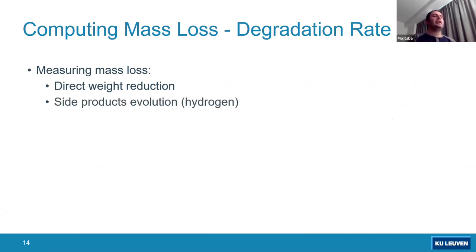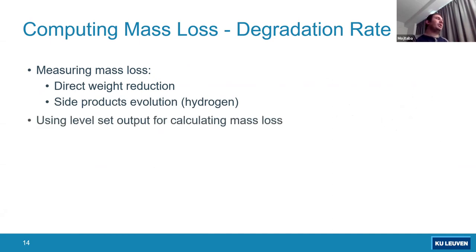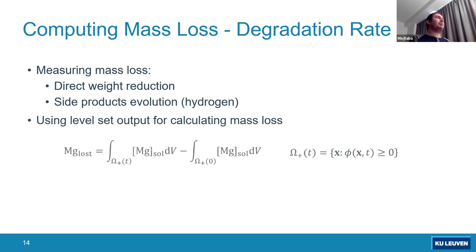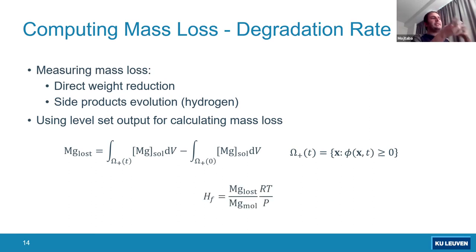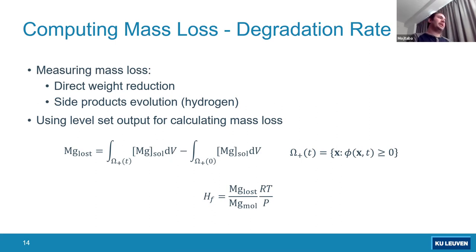Another technique is measuring side products — in this case hydrogen evolution. This is what we do in this research, and this quantity can be easily obtained from the level set output: we integrate the concentration of magnesium ions over only the positive part of the level set function, and then using basic stoichiometry and the ideal gas equation, we calculate the evolved hydrogen. This is something we can compare against experimentally obtained values.